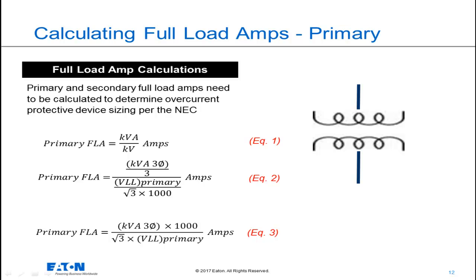So now to get to equation 3, I need to simplify equation 2. We have to move the square root of 3 and 1,000 to the numerator, and then move the number 3 to the denominator. What I don't show here is the fact that when we divide the square root of 3 by 3, we get 1 over the square root of 3. That's why you only see the square root of 3 in the denominator.